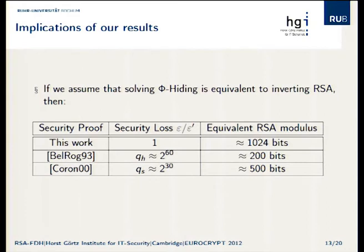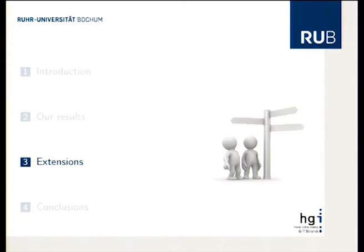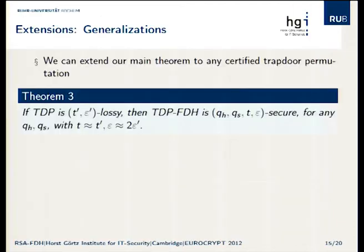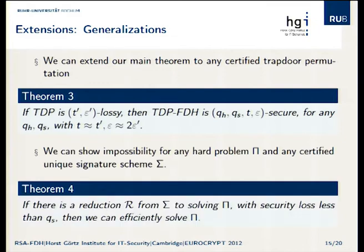So there's still hope and it still seems to work. Our main theorem extends to any certified trapdoor permutation: you can build TDP full domain hash as long as TDP is a certified trapdoor permutation and get essentially the same results. We can further extend this — as Coron did in his paper — to any certified unique signature scheme, which is a signature scheme with unique signatures plus an efficient polynomial-time certification procedure, reducing to any hard problem π. We show that for certified unique signature schemes, you cannot beat the Q_S bound because of the certification.